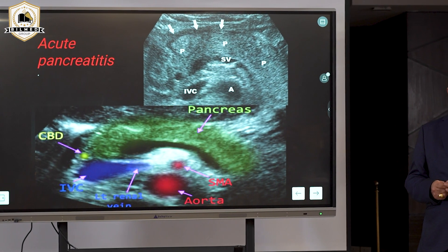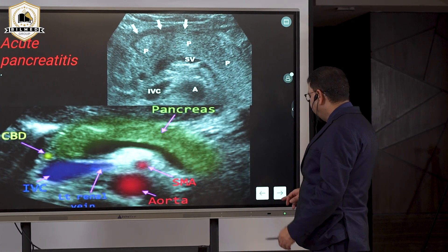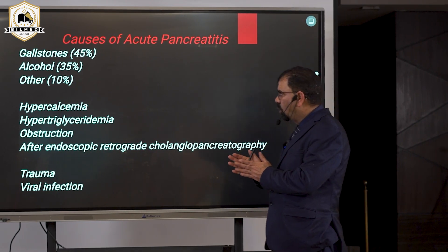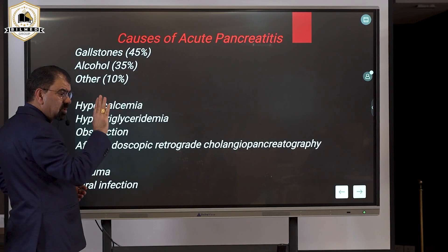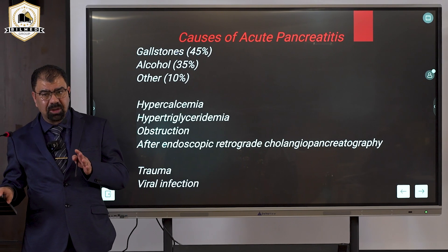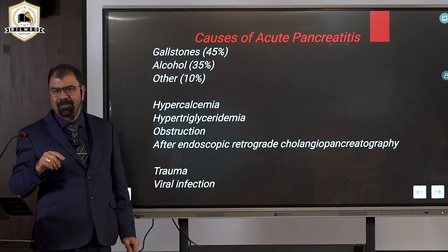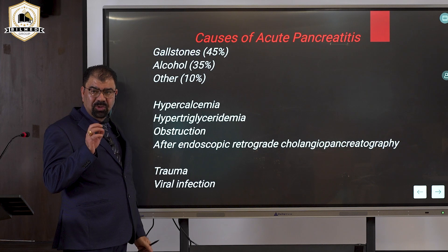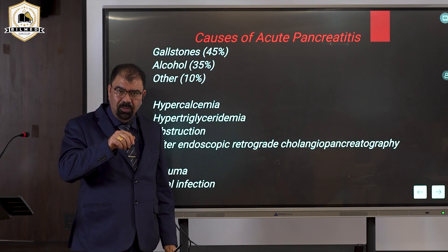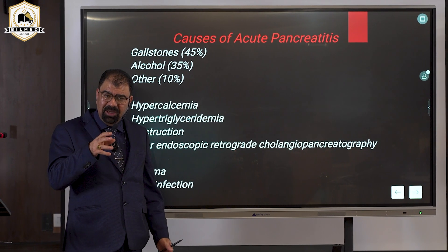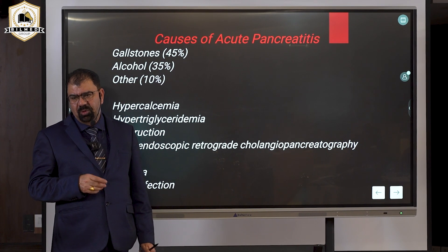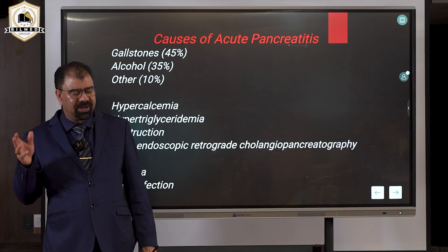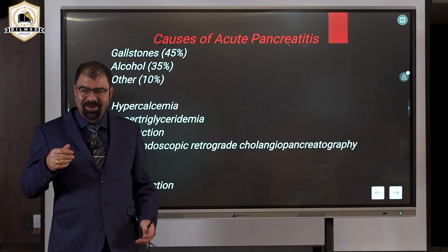In acute pancreatitis, the pancreatic duct can also be dilated. Regarding causes: in about half of patients the underlying cause is gallstones, not alcohol. Gallstones descend and obstruct the lower part of the biliary tract. In addition to pancreatitis, the gallbladder will be overdistended, which signals you are on the right track.